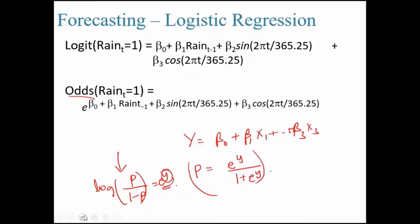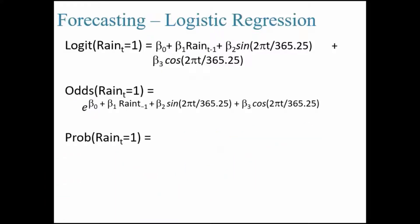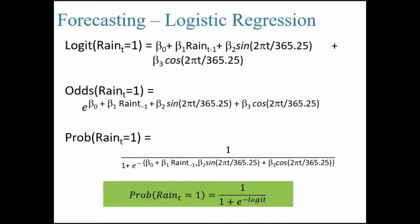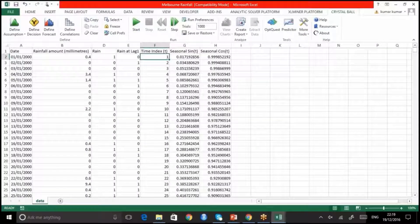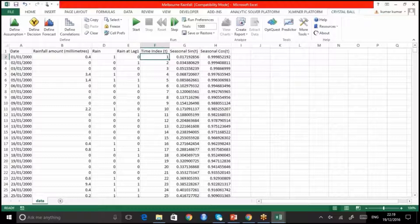In this way probability, odds, log of odds. If you want to know the probability of whether it's going to rain or not, it's 1 divided by 1 plus e raised to the power minus logit. This is a simple calculation. Now let us do a hands-on on this sheet and we will try to understand how to perform this.